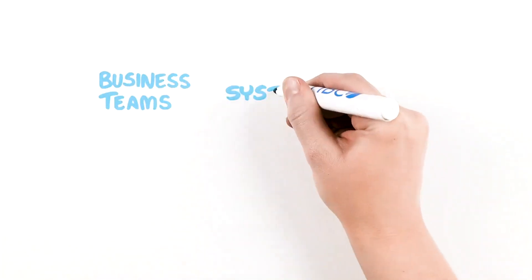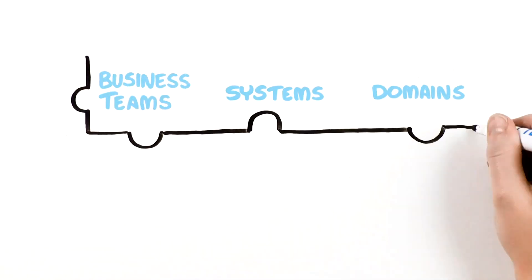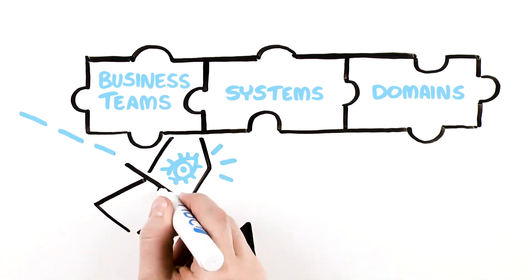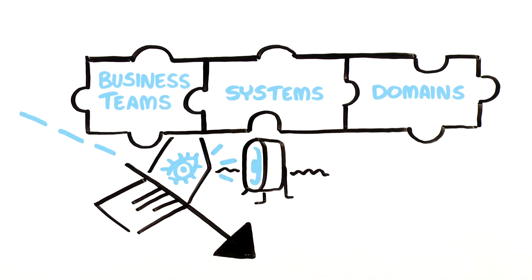But what if we look at all these business teams, systems, and domains together? What we notice is that a siloed product or customer-centric view misses the fact that the domains share relationships or connections.